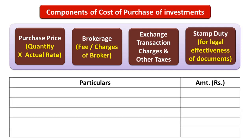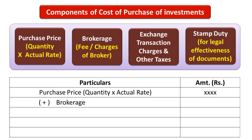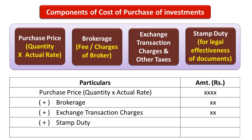Let us move further and observe how to calculate the cost of purchase of an investment. First of all, we have to write the purchase price. In purchase price we have to add the brokerage, then we have to add exchange transaction charges, and finally we have to add the amount of stamp duty paid on it. The total of it will give you the cost of purchase of an investment.